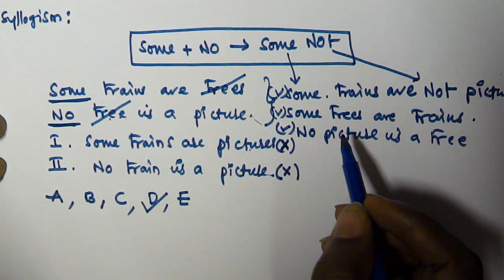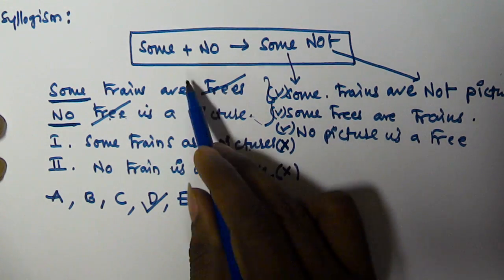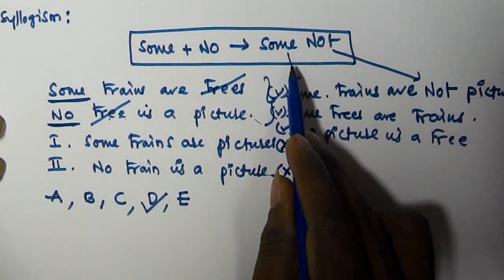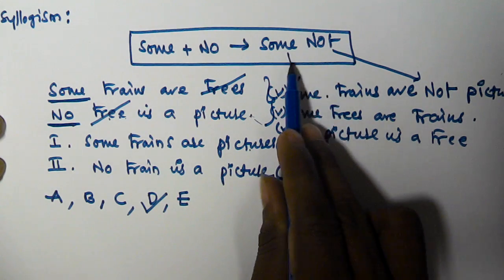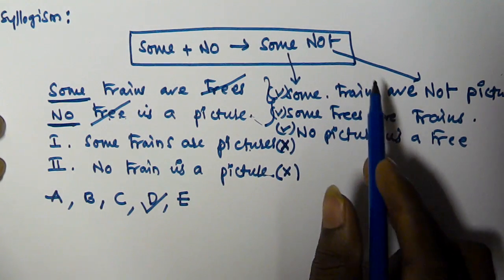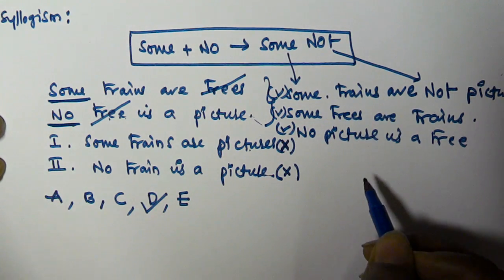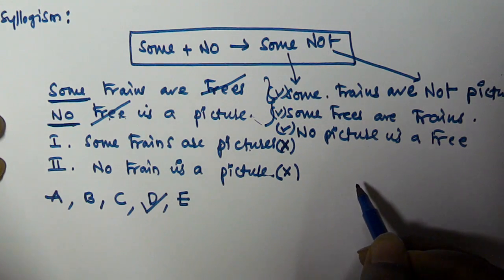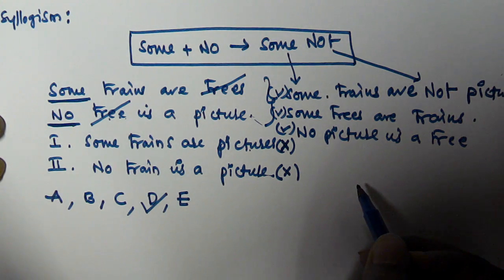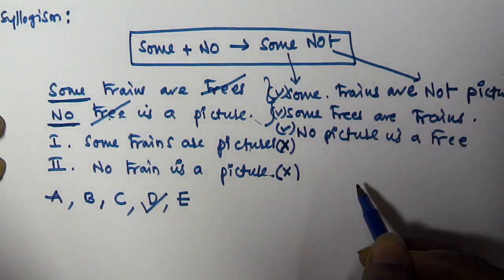Since both conclusions are false, we have to select option D. I hope you understood the 'sum plus no gives sum not' rule. Thank you very much for watching this video, and please subscribe to my channel.